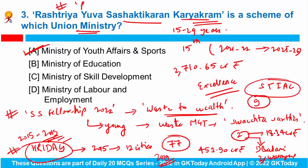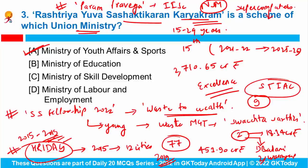What is Param Pravega? Recently, the Indian Institute of Sciences installed and commissioned it under the National Supercomputing Mission. It is claimed to be one of the fastest and most powerful supercomputers in the country, and has been designed by CDAC, that is the Centre for Development of Advanced Computing.